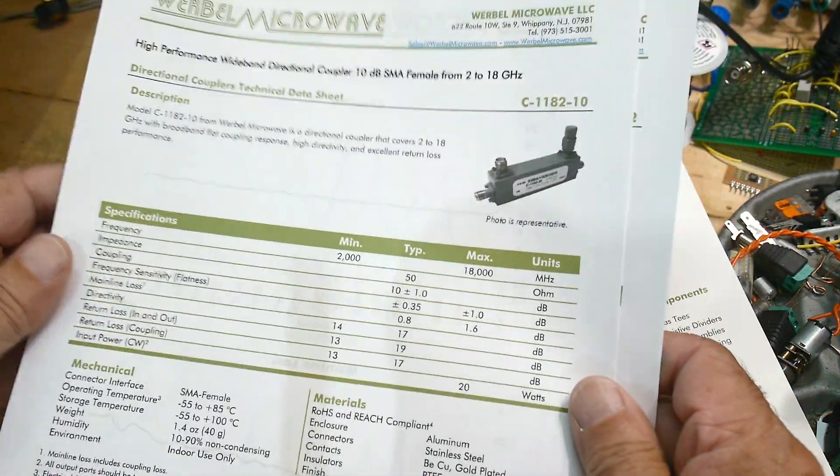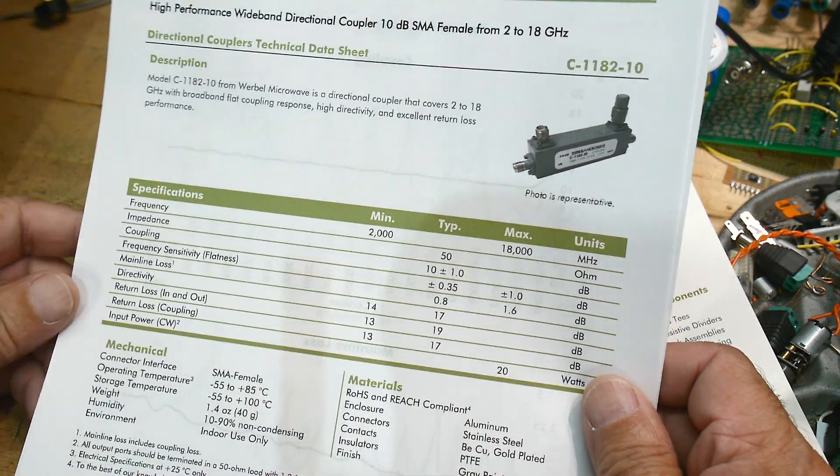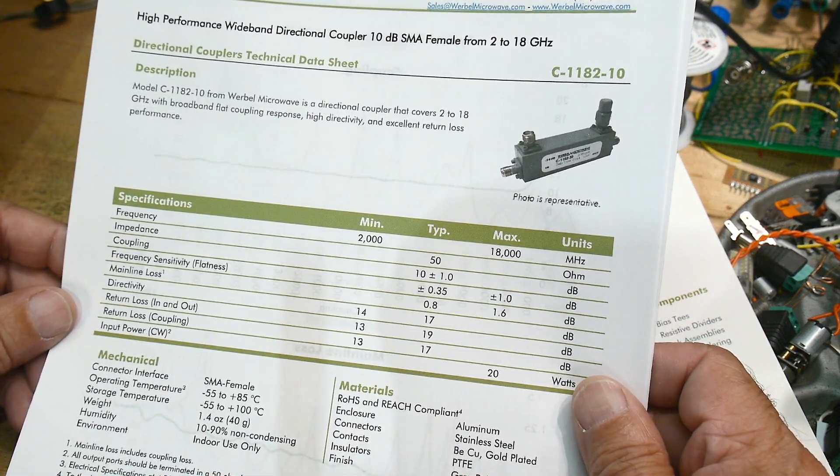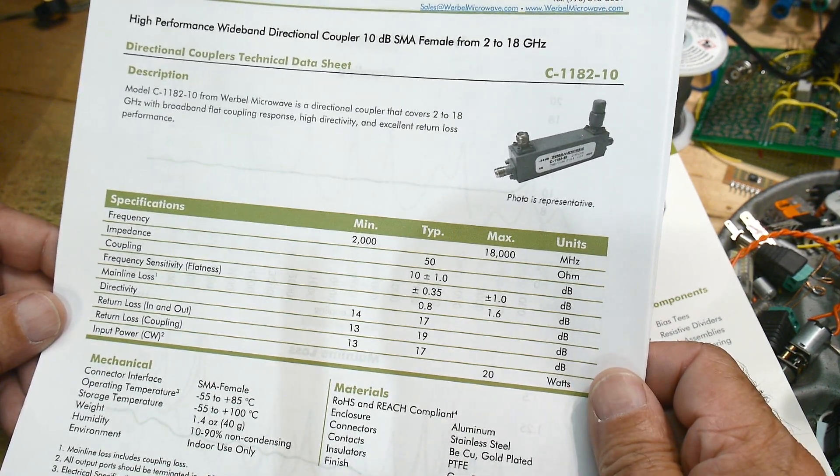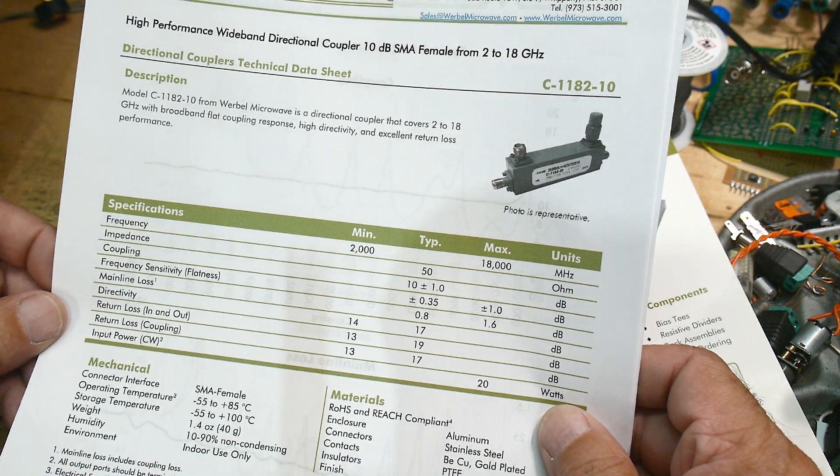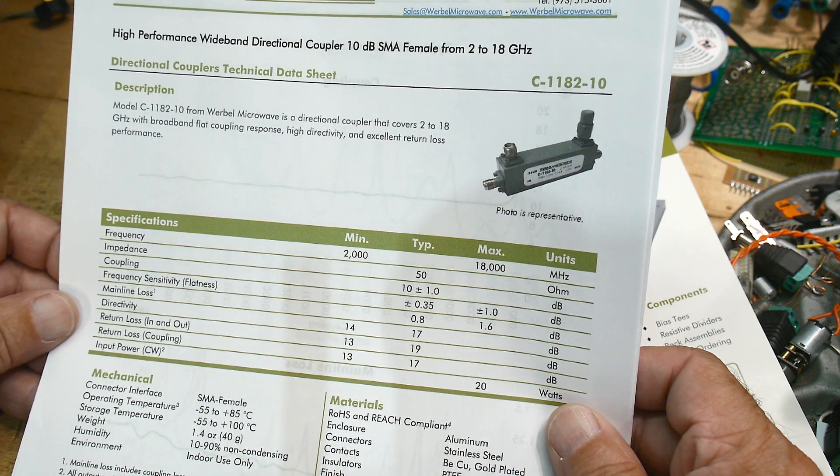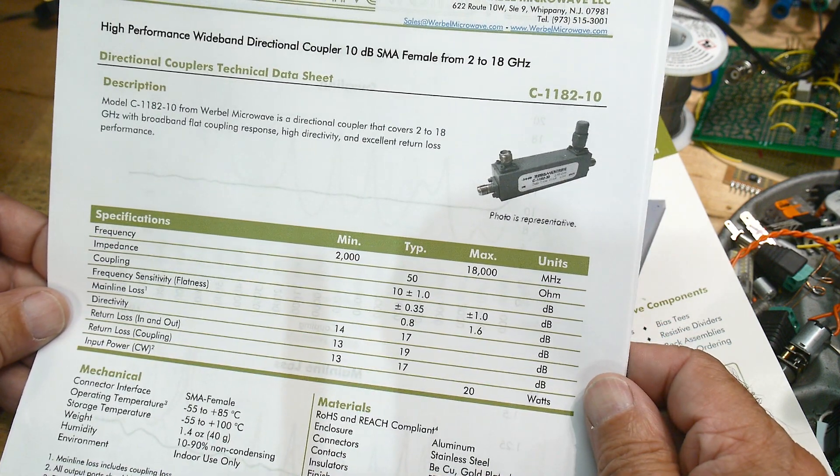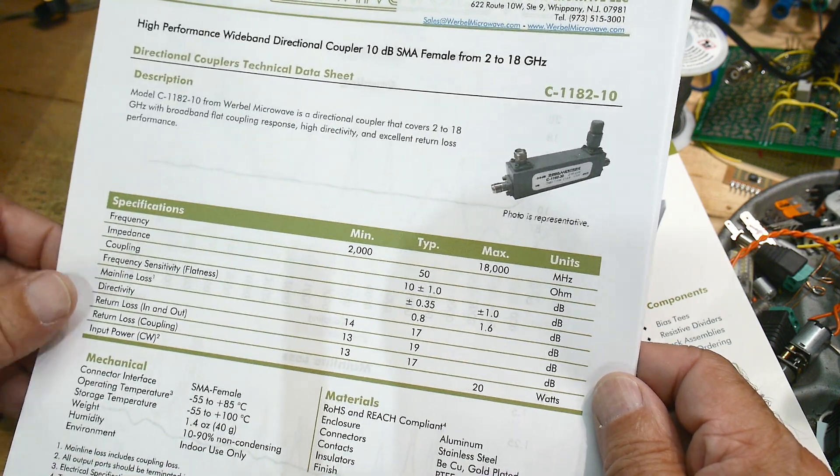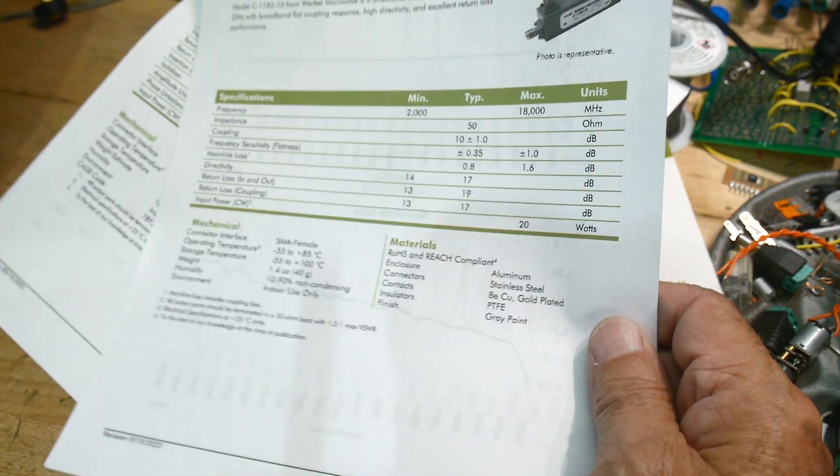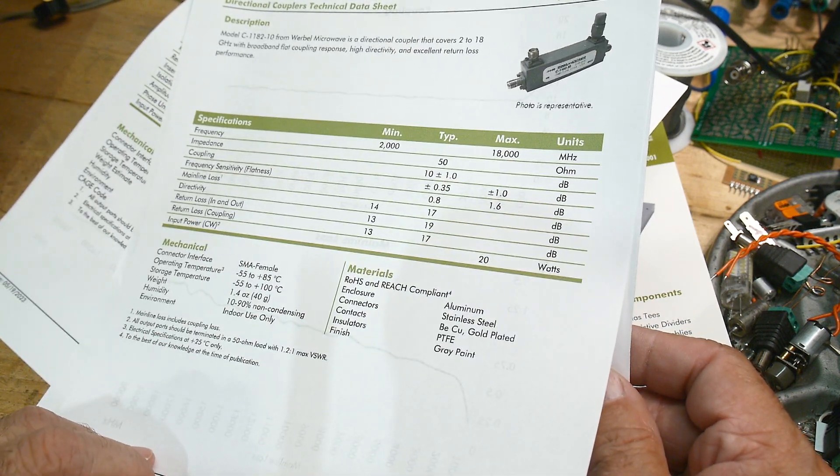Then we have a coupler. It's a 10 dB coupler, which means that it takes off 10 dB of the signal. This looks good for 20 watts. And what is its directivity? Let's see here, return loss. Let's take a look at their directivity. Seventeen.